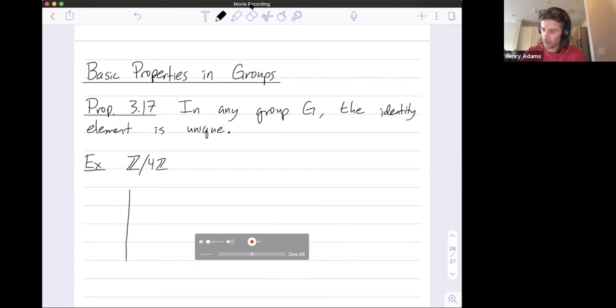And you can draw the Cayley table or the multiplication table for this group. It's called a multiplication table even though the group operation is addition mod 4.